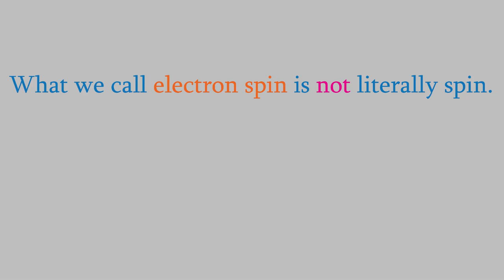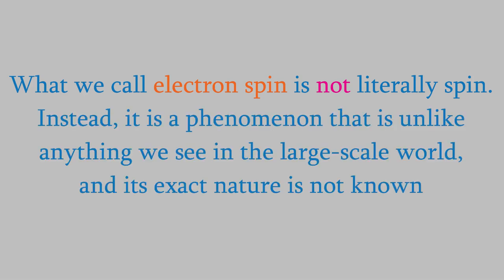Calling it spin just makes it easier for us to visualize. What we're calling spin is actually a property that's unlike anything we can see in everyday life. Because electrons can't actually be seen, it isn't possible to get a good picture of what they're doing, so we really don't know what electron spin is really like.